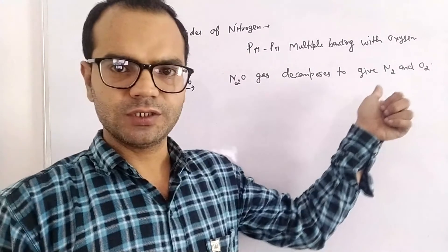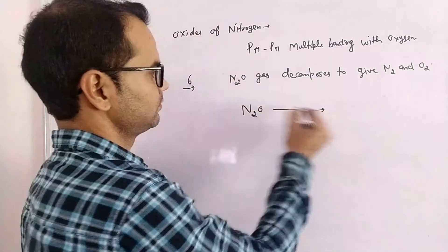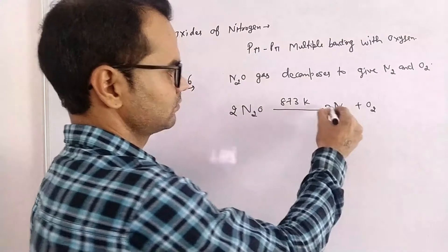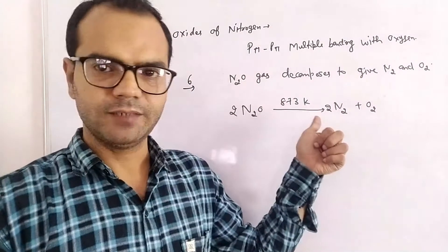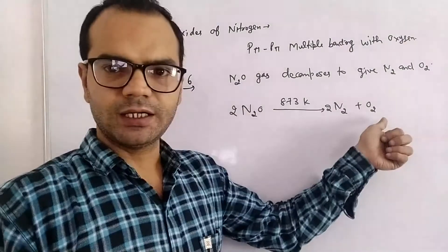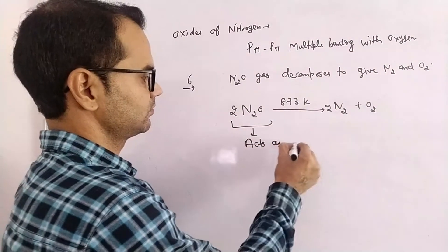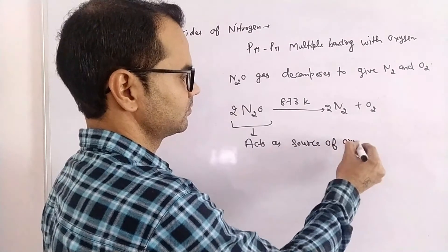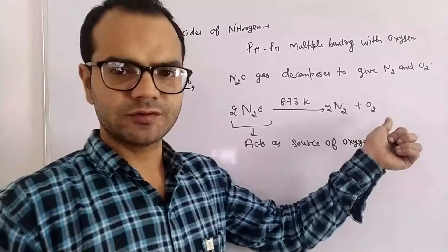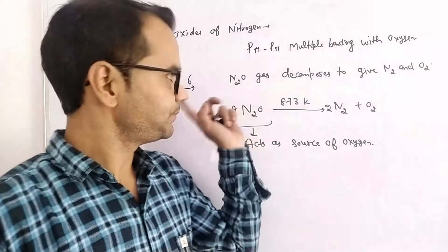N₂O gas decomposes to give nitrogen and oxygen when heated at 873 Kelvin. At this high temperature it gives oxygen, so we can say it is a supporter of combustion, because it acts as a source of oxygen. On decomposition it gives oxygen, and combustion is only possible in the presence of oxygen. This is the first oxide, Nitrous Oxide.